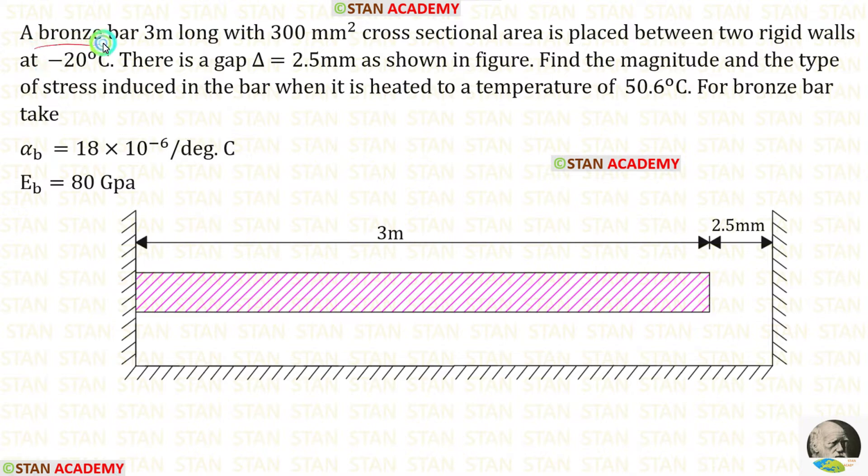A bronze bar 3 meter long with 300 millimeter square cross-sectional area is placed between two rigid walls at minus 20 degrees Celsius. There is a gap delta equal to 2.5 millimeter as shown in the figure. Find the magnitude and the type of stress induced in the bar when it is heated to a temperature of 50.6 degrees Celsius.